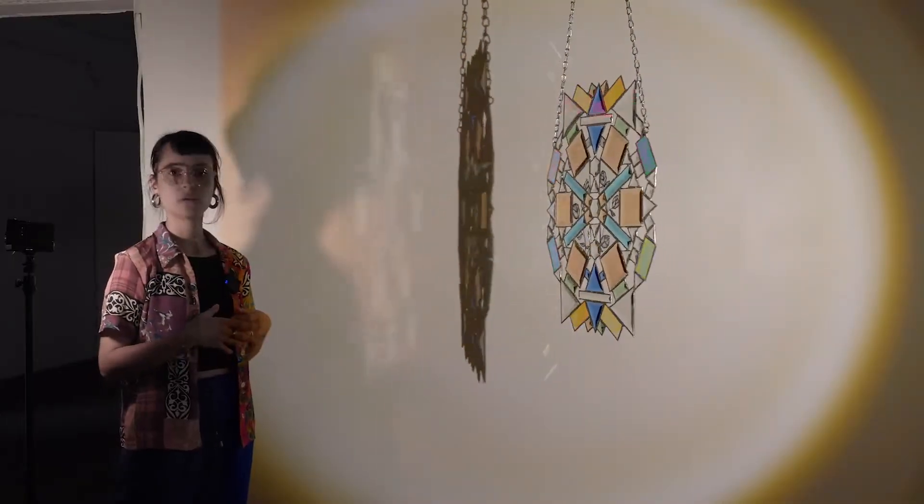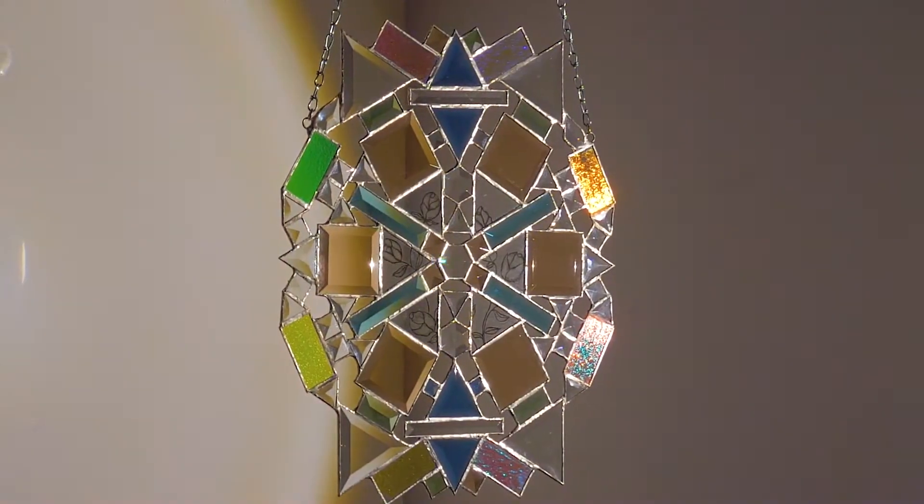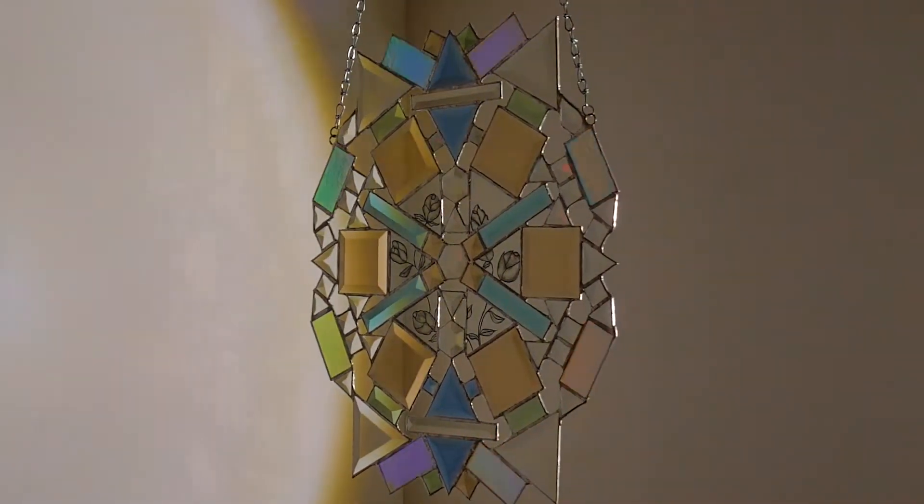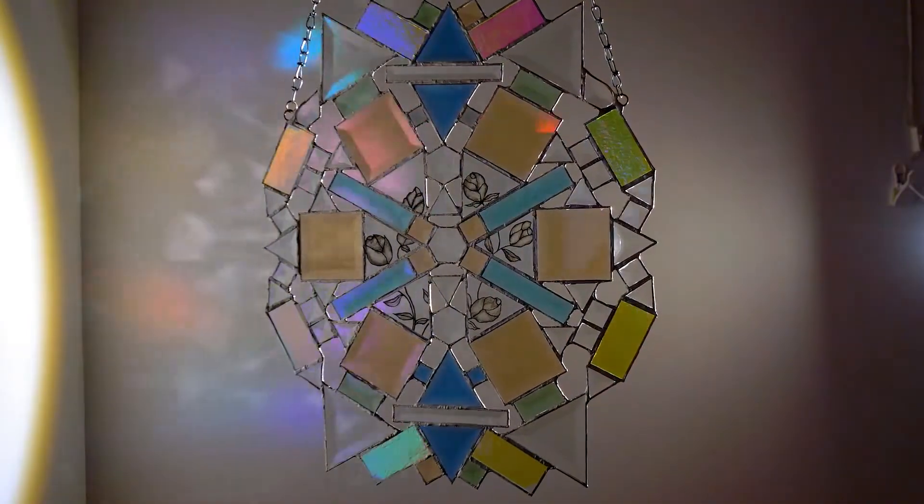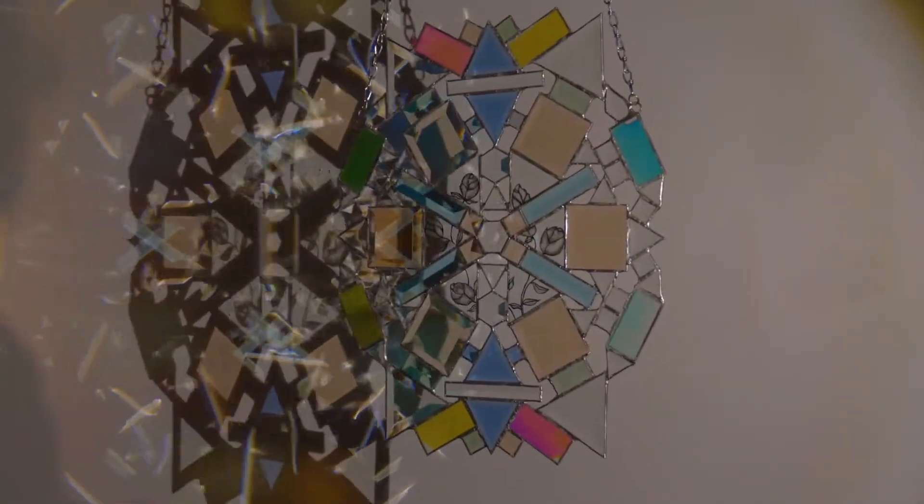I also include dichroic glass into my work, which are these pieces that you can see on all the perimeter that have these rainbow effects. When light goes through it, it diffracts two different types of colors. One goes through it and one reflects on top of the surface near it.